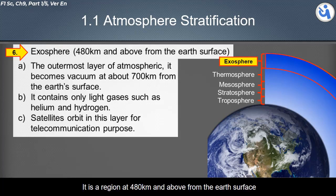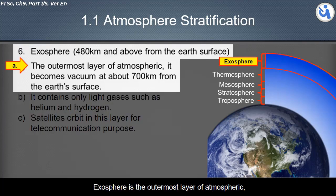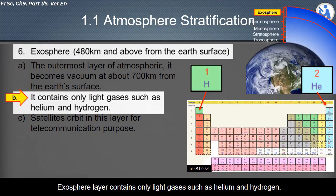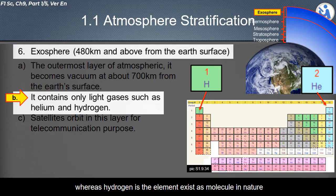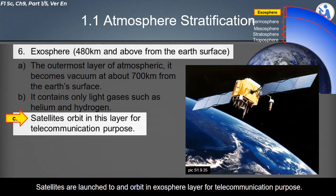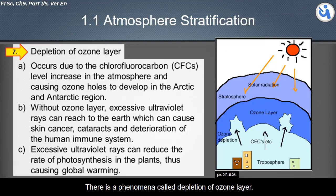The fifth layer of the atmosphere is the exosphere, located at 480 kilometers and above from the Earth's surface. The exosphere contains only light gases such as helium and hydrogen. Helium is the second element in the periodic table, while hydrogen exists as a molecule in nature and is the first element in the periodic table, located in Group 1.